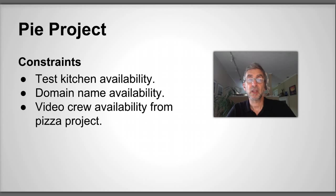Constraints. That my test kitchen is available. The domain name is available. And the video crew is available from the pizza project. These are dependencies in that it depends on the test kitchen being available, but it's a constraint in that I really can't do anything if the test kitchen isn't available. The video crew available from the pizza project is a constraint because I really can't go forward without that video crew. I'm constrained on what I can do and how quickly I can get it done by these constraints.